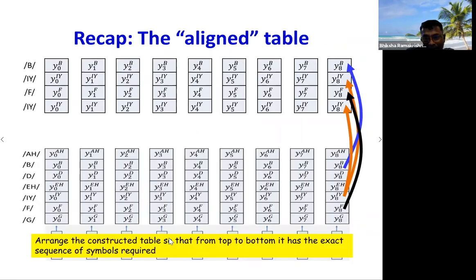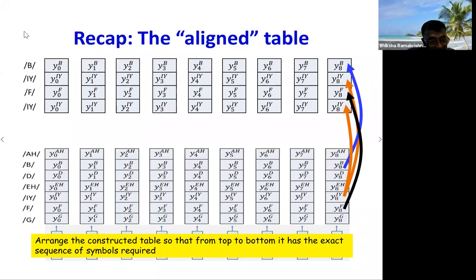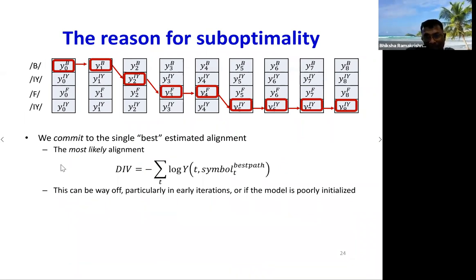To understand this, we go back to the reduced probability table for the label sequence, constructed by pulling out the corresponding rows from the output probability table. For Viterbi alignment, if the target label sequence was 'beefy,' we pull out the probability rows for B, E, F, and E, stack them, and operate on this table. Viterbi alignment found the best path from the top-left node to the bottom-right node as the guessed alignment. The reason we got suboptimal training is that even though we found the most likely alignment for our current model, if the model is poor — as it will be in the initial stages of training — the alignment can be way off, leading to a poor updated model.